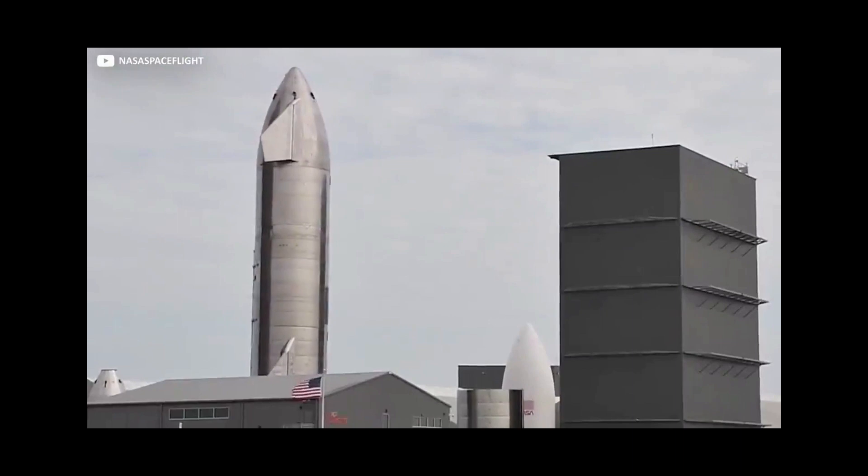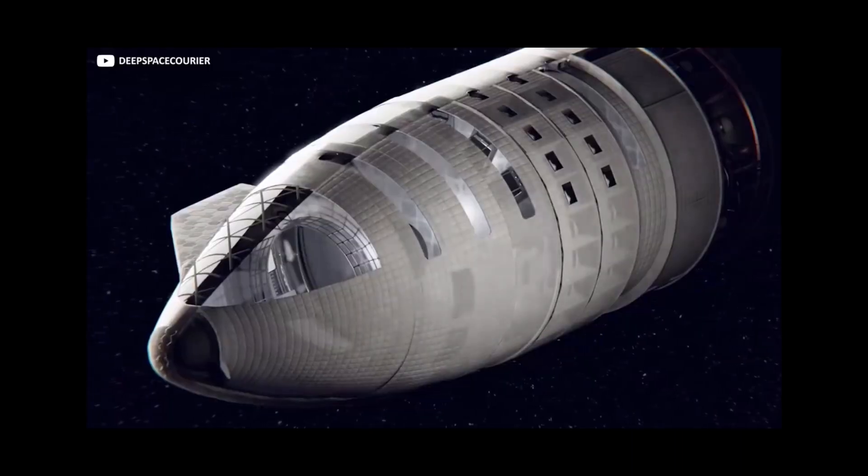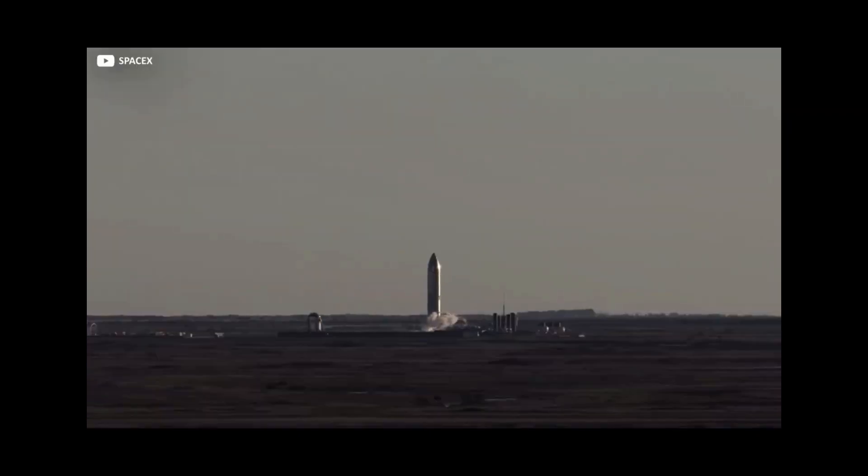To this end, Musk has been frantically developing a pioneering interplanetary vessel known as Starship, launching and iterating fresh prototypes at a frankly insane rate. But how does it all work, and what's inside that giant shiny cylinder that keeps crashing? Today we gingerly venture onto the long-suffering launch pad for a sneak peek inside the Starship.